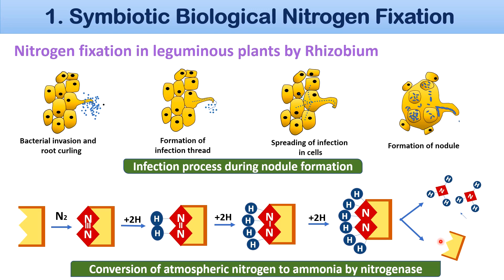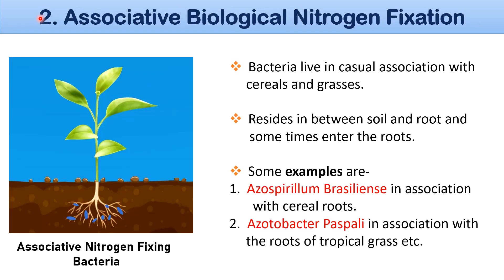The second one is associative biological nitrogen fixation. Certain bacteria which live in casual association with cereals and grasses fix nitrogen. They reside in between the soil and roots and sometimes enter the roots. Plants utilize the fixed nitrogen, and in turn the carbohydrates released by plants are used by bacteria for nourishment. Some examples are Azospirillum in association with cereal roots and Azotobacter in association with roots of tropical grasses.